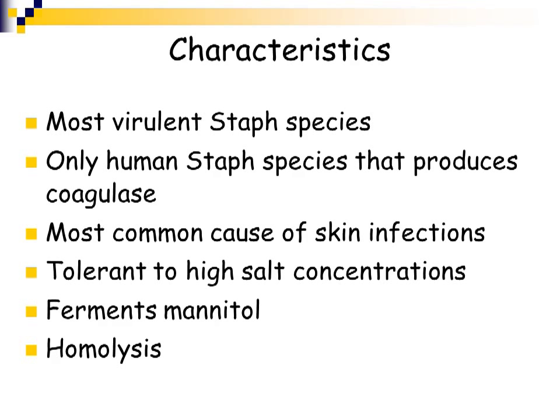Staphylococcus aureus is the most virulent staphylococcus species. It is the only coagulase-positive human staphylococcus species that also produces catalase. It is the most common cause of skin infections. It is tolerant to high salt concentrations, which is another distinguishing characteristic. Another defining characteristic is that it is able to ferment mannitol, and it is also hemolytic.